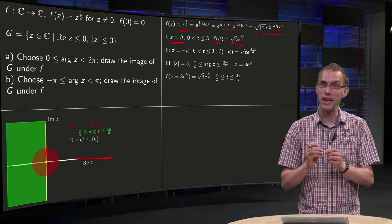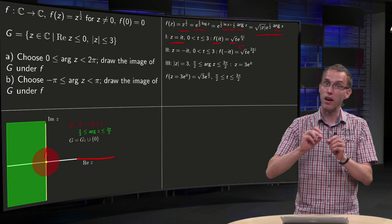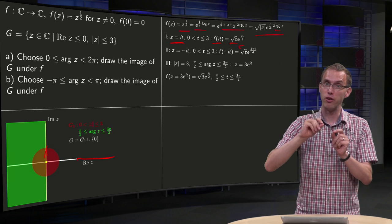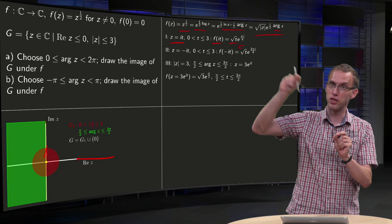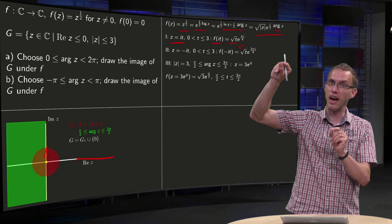So what you see as an image, you get constant argument and norm between zero and square root of 3. So you get the line segment.